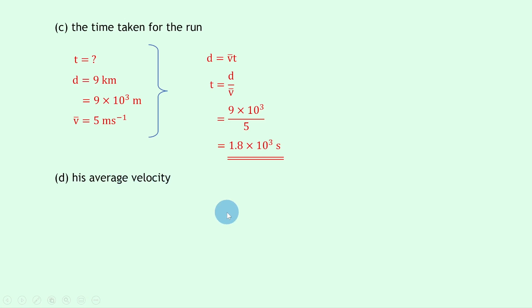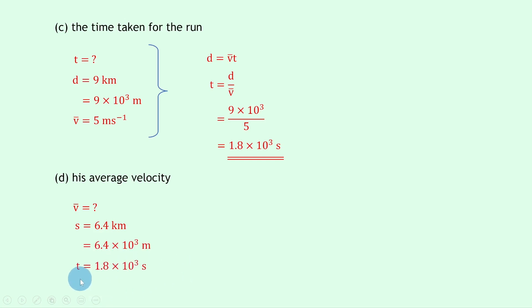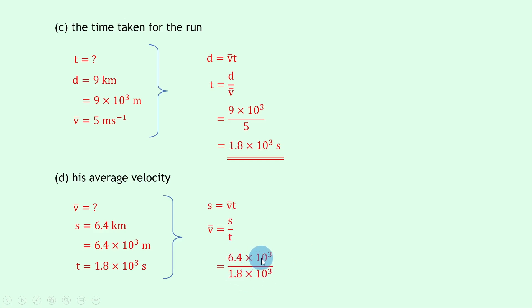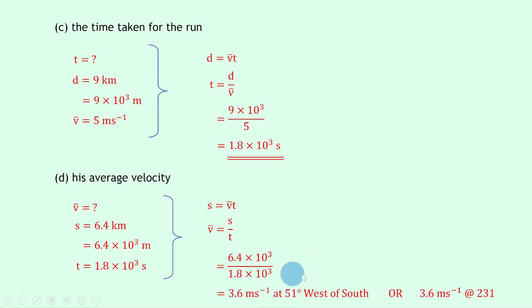Part d says to find his average velocity. To find average velocity we need displacement s from part b. We know s is 6.4 kilometers, the same as 6.4 times 10 to the 3 meters, and the time is 1.8 times 10 to the 3 seconds from part c. Writing s equals v-bar times t and rearranging gives v-bar equals s over t. Substituting gives 6.4 times 10 to the 3 over 1.8 times 10 to the 3, which gives 3.6 meters per second. Including direction because velocity is a vector: 3.6 meters per second at 51 degrees west of south, or 3.6 meters per second at a bearing of 231.